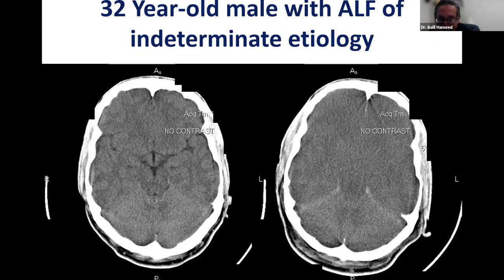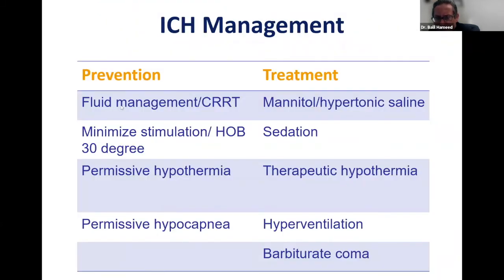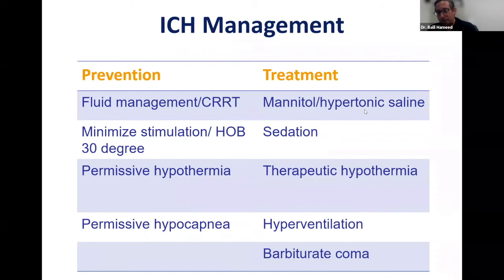How do we manage intracranial hypertension? Simple prevention tools include fluid management. In the U.S., we start continuous renal replacement therapy — continuous dialysis — to manage fluid. Elevate head of bed at 30 degrees and provide minimum stimulation. Sometimes we use permissive hypothermia. If intracranial hypertension develops, we use mannitol or hypertonic saline. Sedation is important to minimize stimulation. In very severe cases we can use barbiturate coma, depending on critical care and neurology expertise.